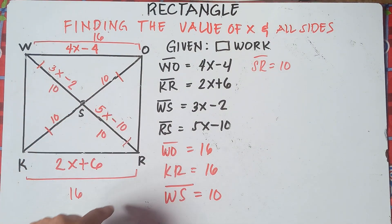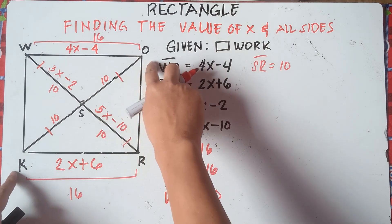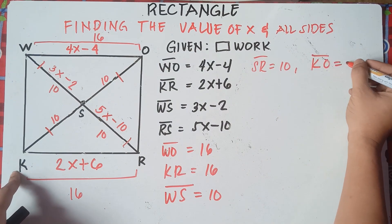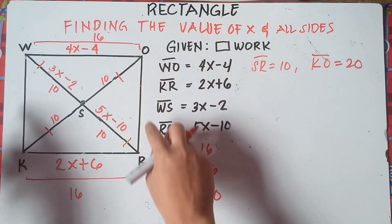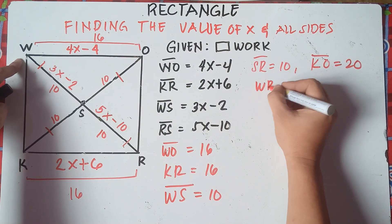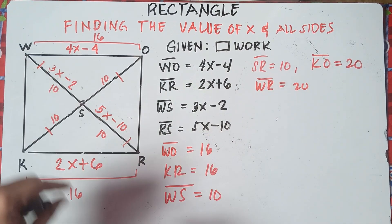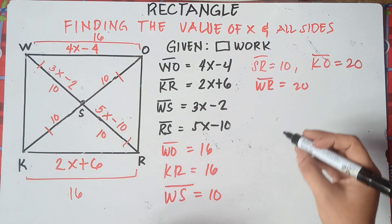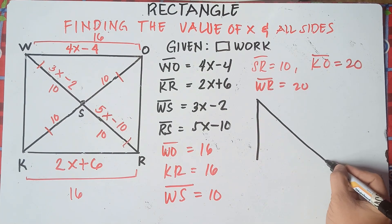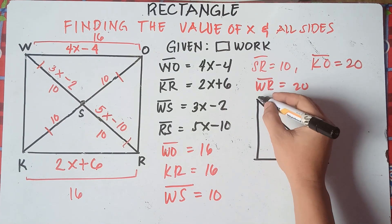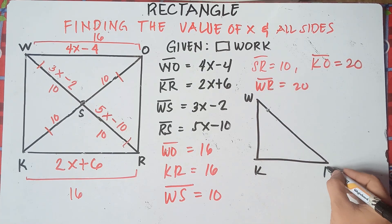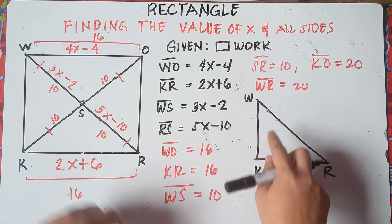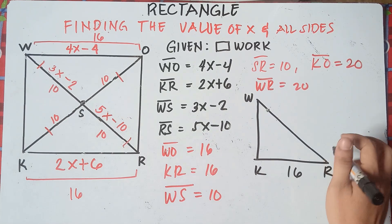Since the diagonals bisect each other and each half is 10, the full diagonal KO equals 20, and line WR also equals 20. Now in triangle WKR, we already have KR equals 16 and WR equals 20, because WS is 10 and SR is 10, so WR equals 20.